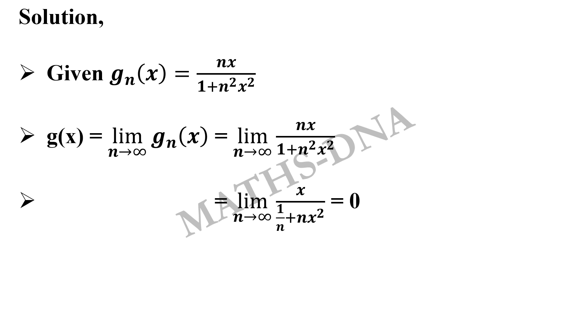This gives us limit n tends to infinity x upon 1 by n plus n times x square. Now no matter what x you select, this limit will always be equal to 0.